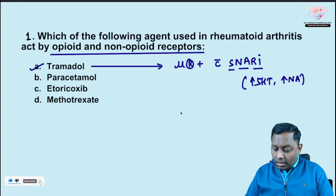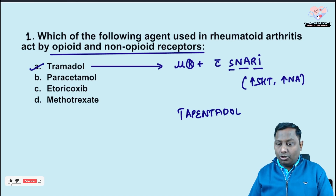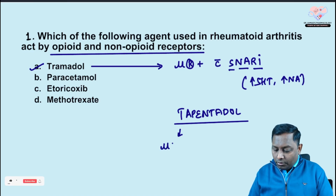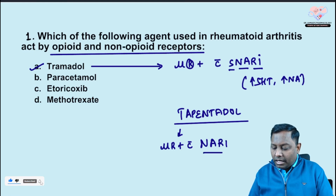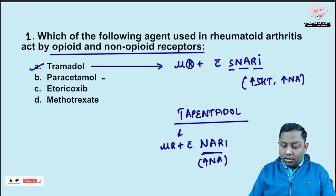I want you to add one more drug here — tapentadol. Since this question has already been asked, tapentadol is a potential upcoming MCQ. Tapentadol is similar to tramadol but is mainly a mu receptor agonist with NRI — noradrenaline reuptake inhibitor — so it only increases the level of noradrenaline.